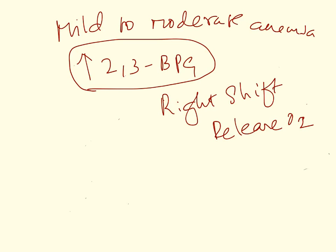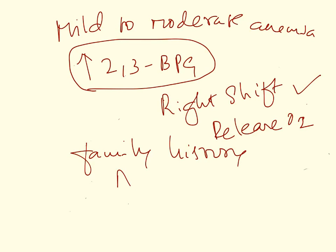Other signs expected in pyruvate kinase deficiency include: mild to moderate anemia, increase in 2,3-BPG leading to right shift in the oxygen dissociation curve, and a positive family history. Pyruvate kinase deficiency is an autosomal recessive condition, so other family members may also be affected.